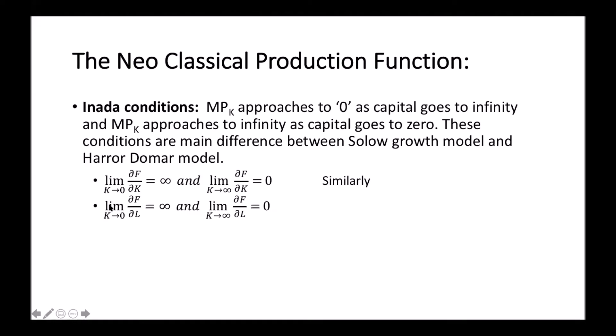We say that limit as labor approaches to zero, marginal productivity of labor approaches to infinity, and limit as labor approaches to infinity equals zero. This is the third property of the neoclassical production function.